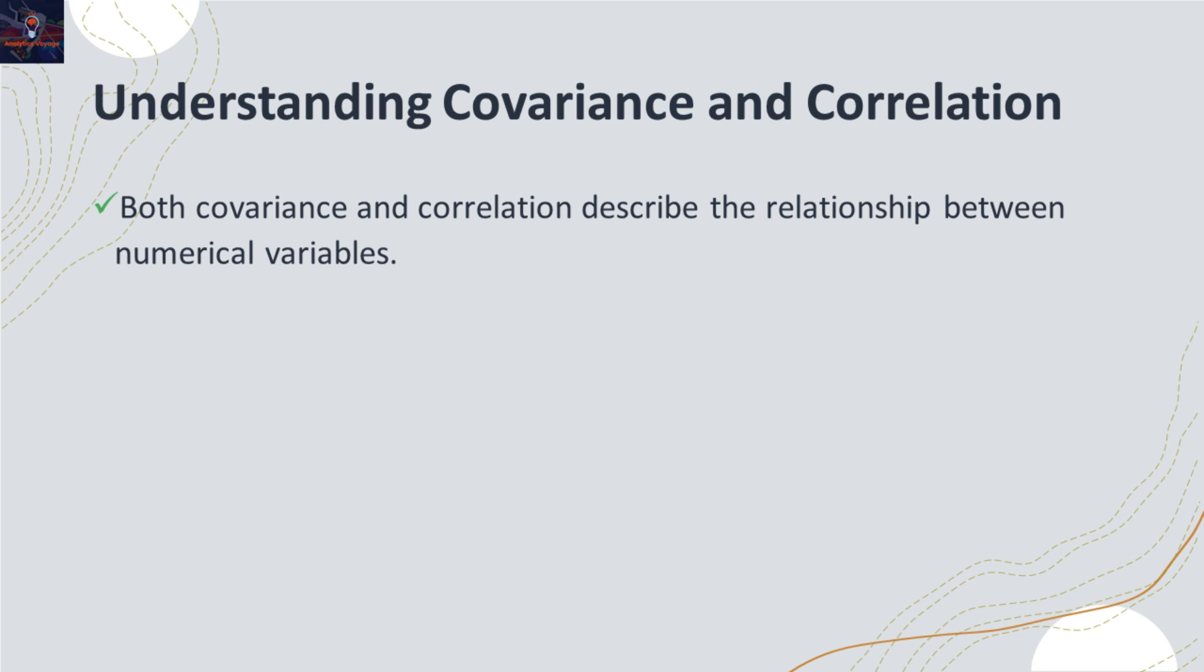Let's start with a simplified explanation of covariance and correlation. Both covariance and correlation describe the relationship between two numerical variables.